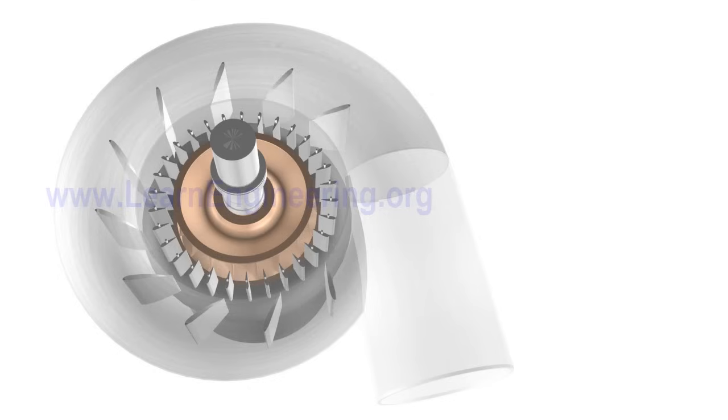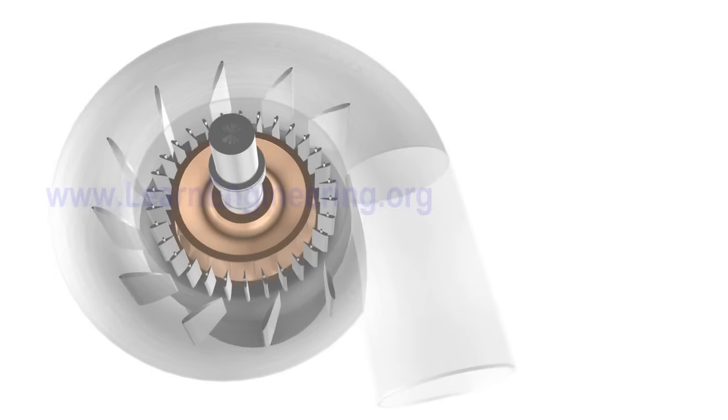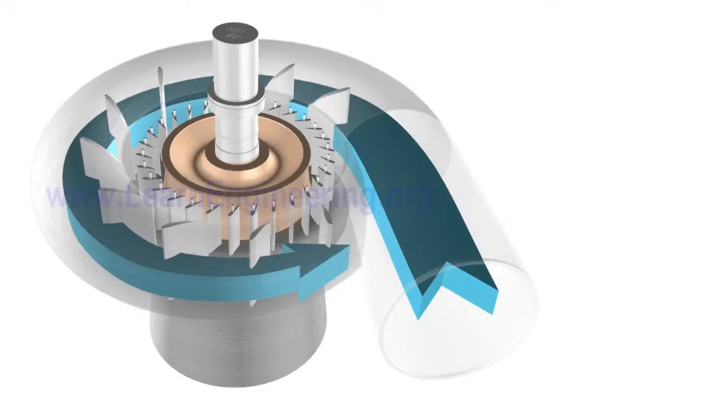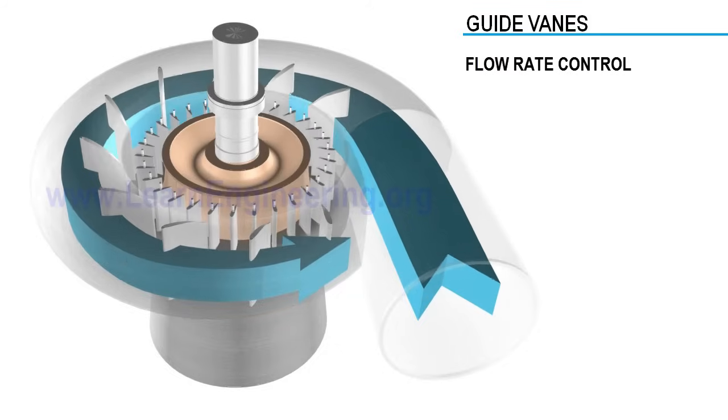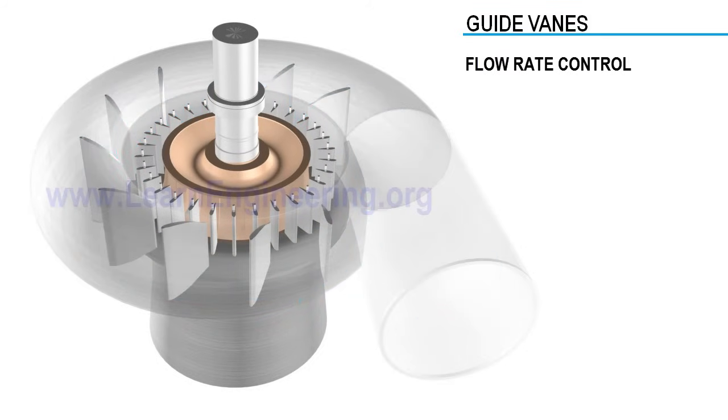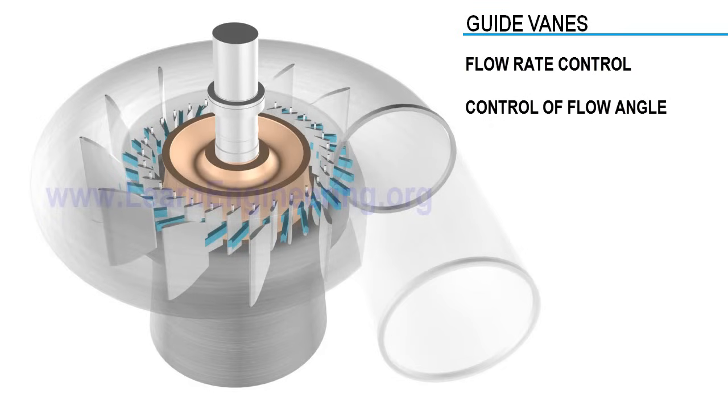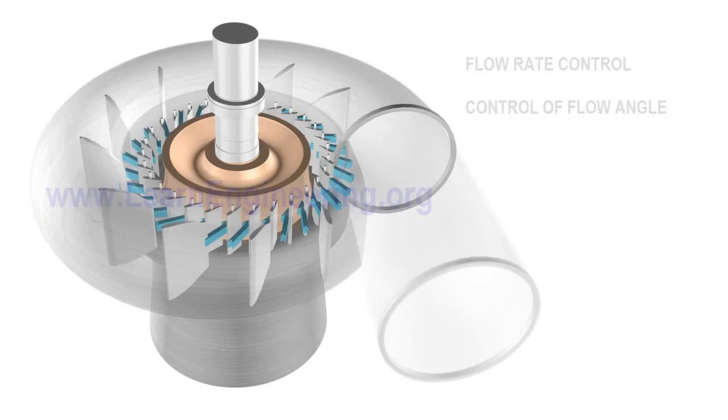Demand for power may vary over time. The guide vane mechanism is used to control water flow rate and make sure that power production is synchronized with power demand. Apart from controlling flow rate, guide vanes also control flow angle to the inlet portion of runner blade. Thus guide vanes ensure that inlet flow angle is at optimum angle of attack for maximum power extraction from fluid.